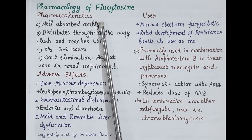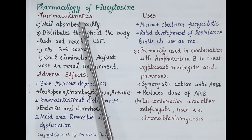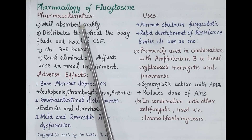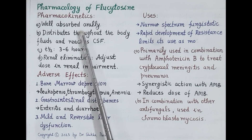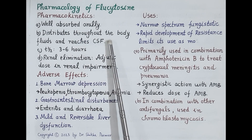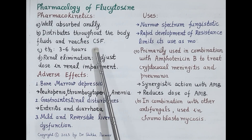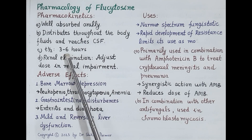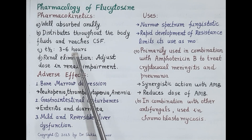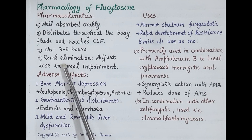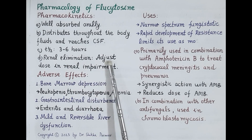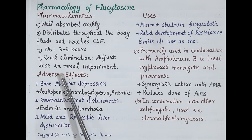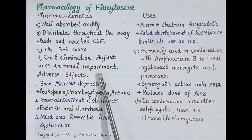Now let's study some important pharmacokinetic features of flucytosine. Flucytosine is administered orally and is well absorbed on oral administration. It gets distributed throughout the body fluids and also reaches the cerebrospinal fluid. The half-life of flucytosine is 3–6 hours. It is excreted by renal elimination, and therefore dose adjustment is essential in renal impairment.